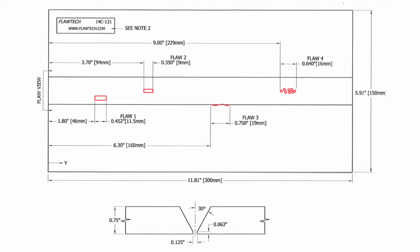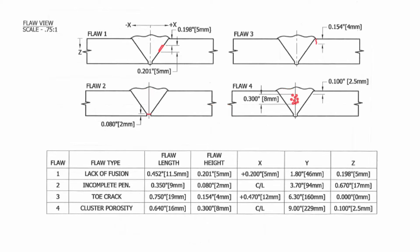The weld considered in this demo is a carbon steel weld plate with a nominal wall thickness of 19mm or three-quarters of an inch. It has a commonly used V-type bevel and contains typical welding defects: lack of fusion, incomplete penetration, a toe crack, and a cluster of porosity.